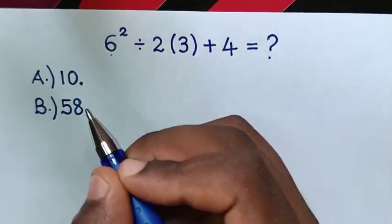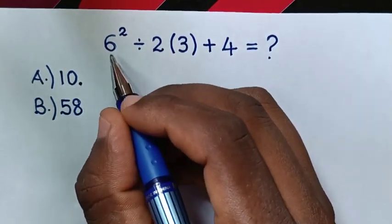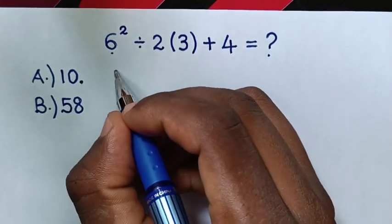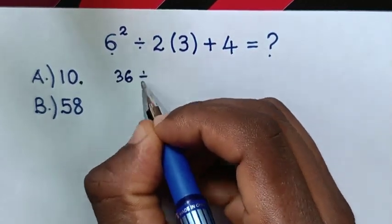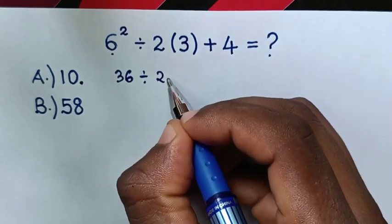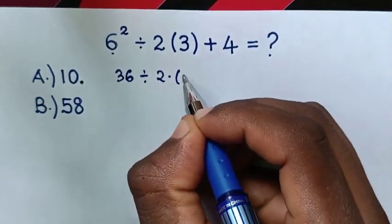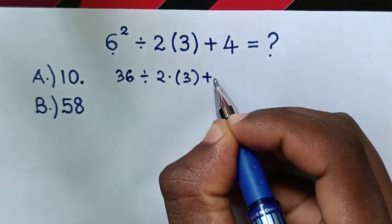So, from how we get 10 as the answer from this problem, 6 square is 36. Then divide by 2, then times 3 brackets, then plus 4.